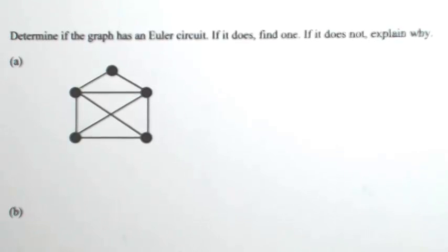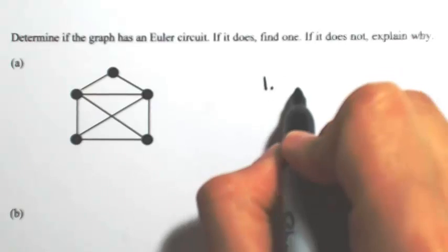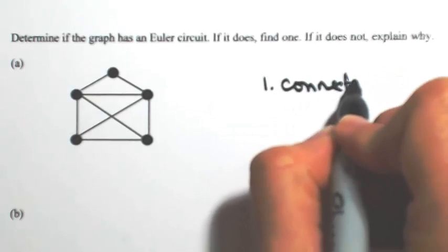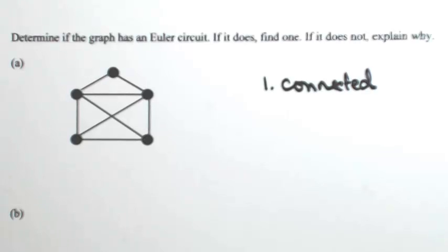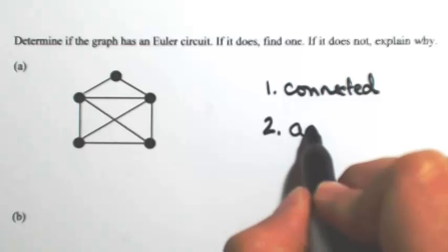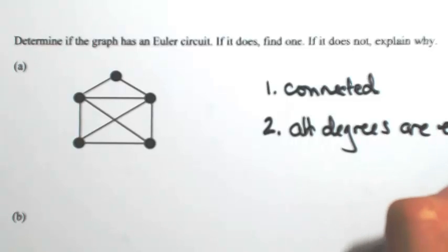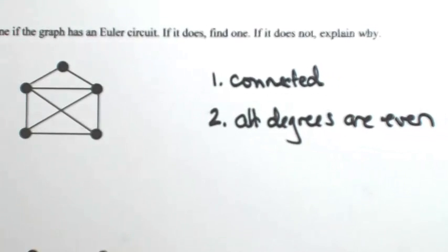Determine if the graph has an Euler circuit. If it does, find one. If it does not, explain why. To determine if a graph has an Euler circuit, we're basically looking for two things. The first thing is that the graph needs to be connected, which means that I can get from one vertex to any vertex some way. The second thing is that all of the degrees are even. So as long as the graph is connected and all the degrees are even, it will have an Euler circuit.